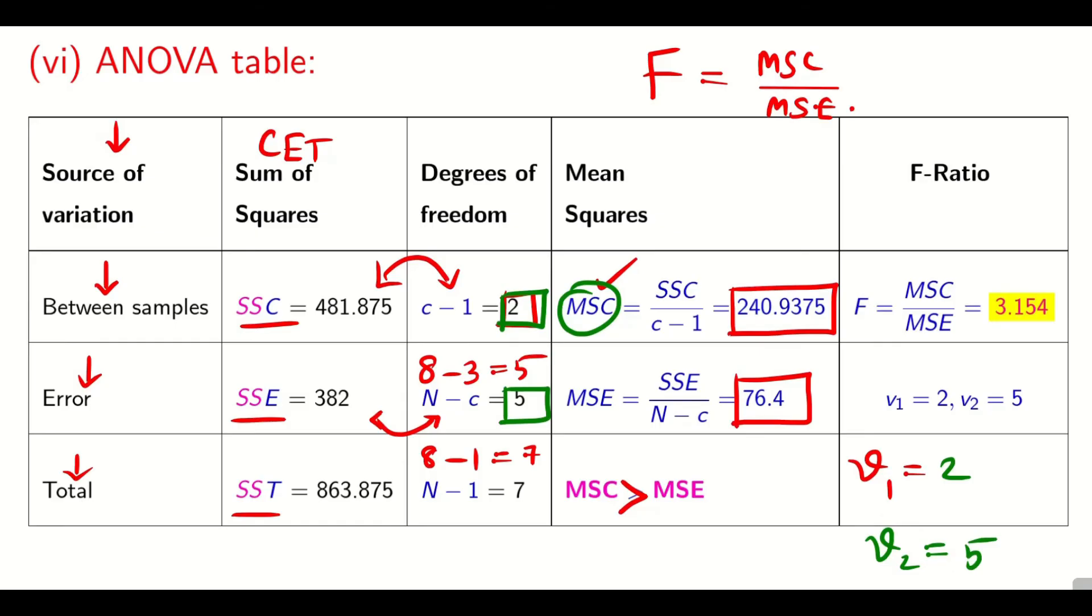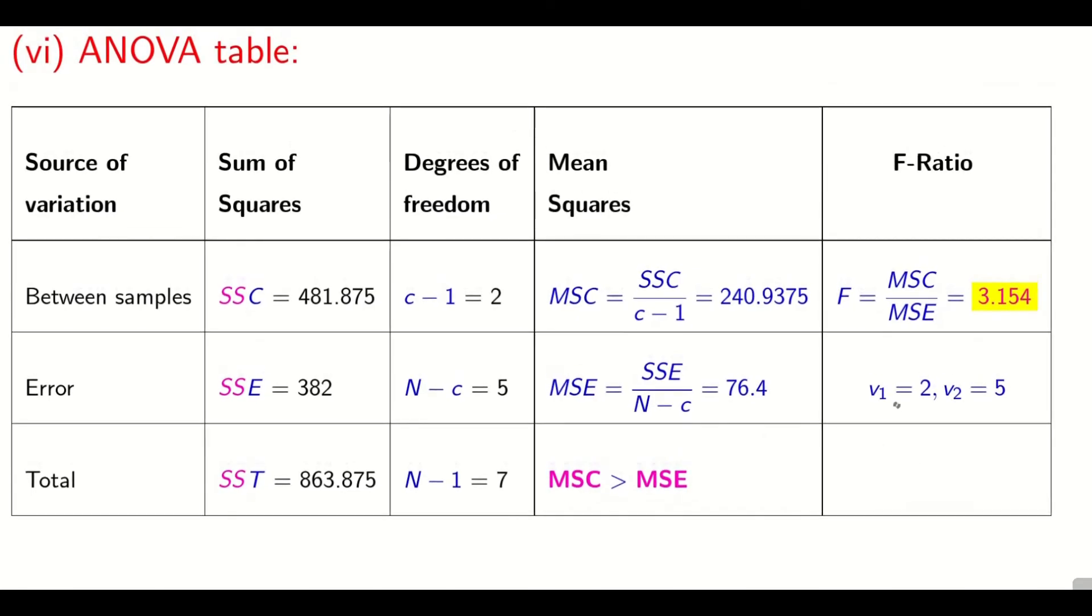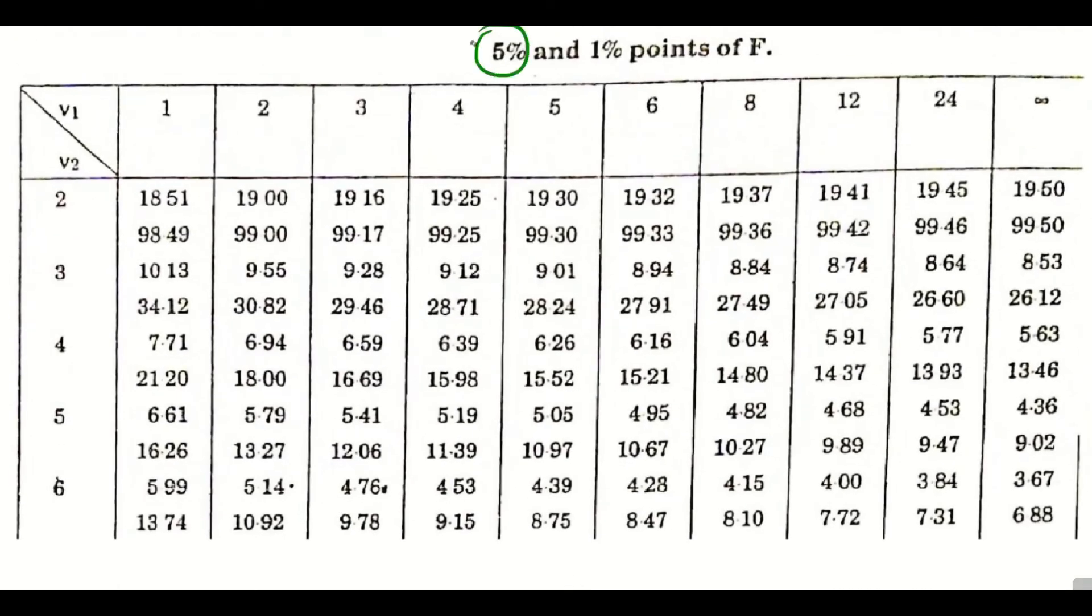Now I will tell you how to find that alpha value from the table. So let us see. Since the degree of freedom what we found, v₁ is 2, v₂ is 5. Now I am going to find F alpha value from the table at 5%. Your table will be like this. You should be very careful. You see here, first is 5%, the second one is 1%. So now v₁ is 2, v₂ is 5. Always consider this v₁, v₂: v₁ is column and v₂ is row. So v₁ is 2 means in the second column, v₂ is 5 means in the fifth row. In the second column, fifth row.